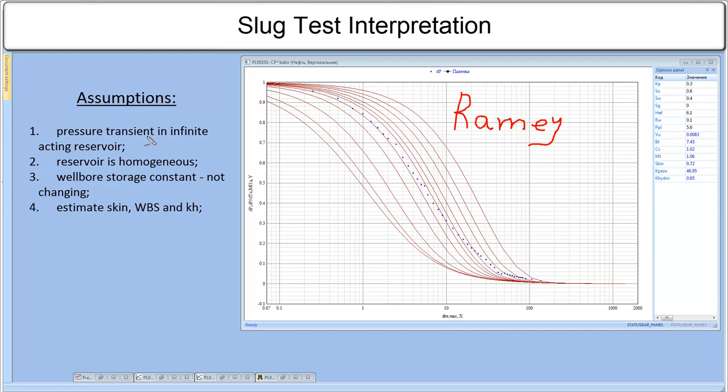The Ramey type curves are plotted over the real data points on similar plot. For y-axis, dimensionless pressure is calculated as PI-PW over PI-P0, where PI is initial reservoir pressure, PW is wellbore pressure, and P0 is pressure at start of the test. For x-axis, we use test time on log scale.